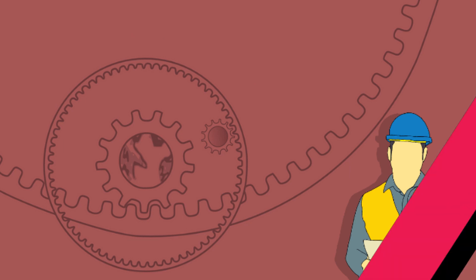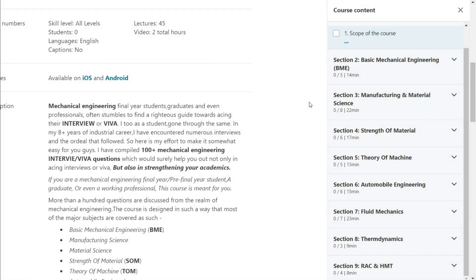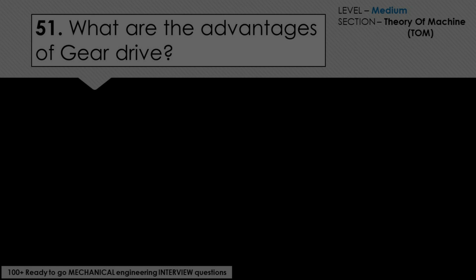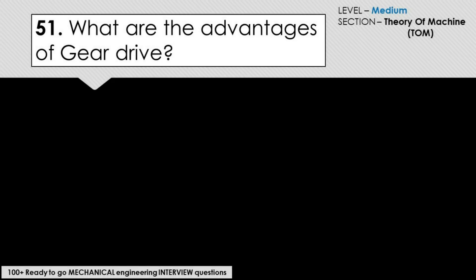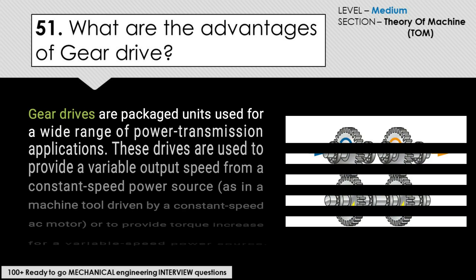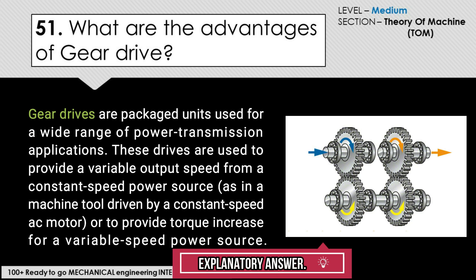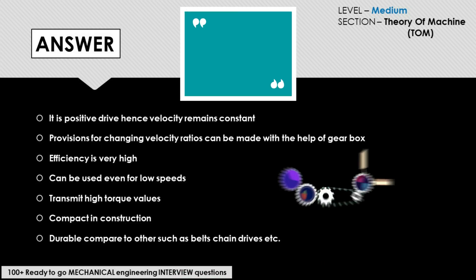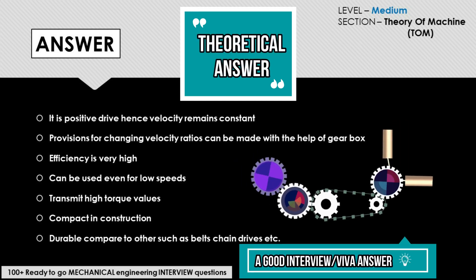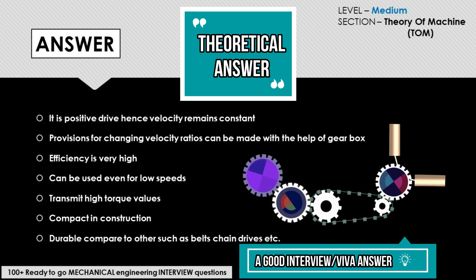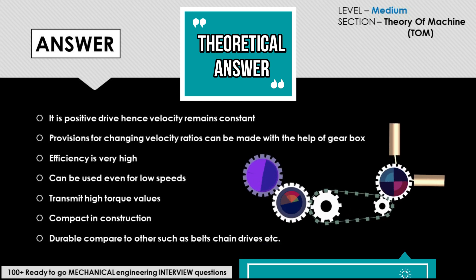The course is designed in such a way that most of the major subjects are covered. There are two answers for every question in the course. The first answer, which will appear just below the question, is the explanatory answer, which contains relatively easy language and a practical approach. The second answer is a bit theoretical and can be considered a good answer while facing a viva or interview.